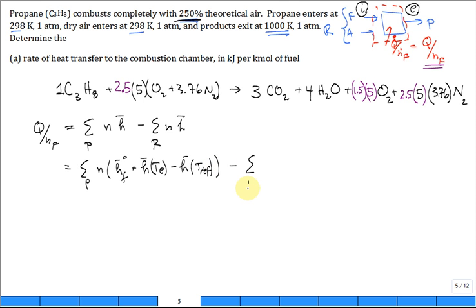Minus the sum of the products, I mean the reactants. The coefficient, the coefficient, enthalpy of formation, the molar enthalpy at the temperature of the incoming minus the enthalpy at the reference. Did I write that correct? Give me a thumbs up if you like it.